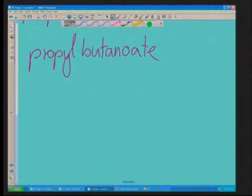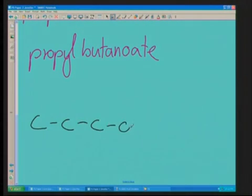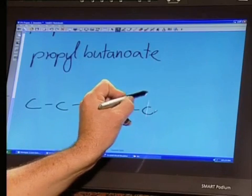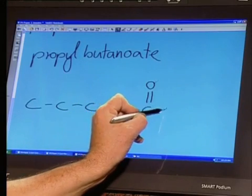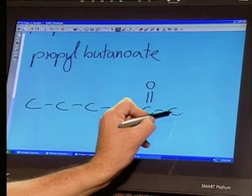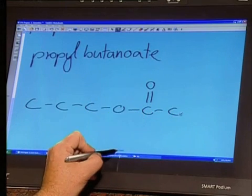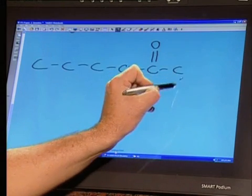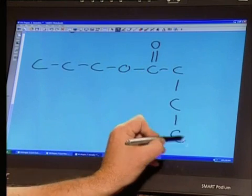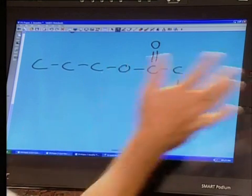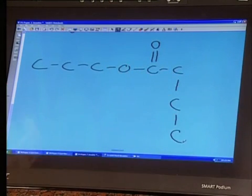I just want to change my pen color. So we want propyl: one, two, three. And then we're going to go to the ester bond O-C double bond O, and we've got to have four: one, two. I'm going to need to extend the page and I'm going to turn the corner. Okay, is that okay, just to fit it in? If you're running out of space in the exam, remember you can turn the corner as well.